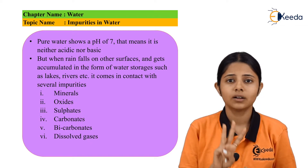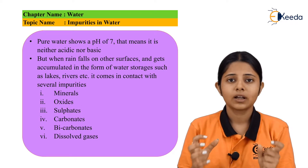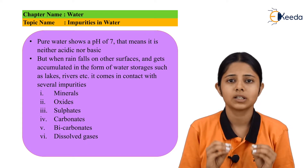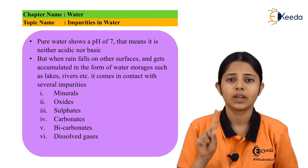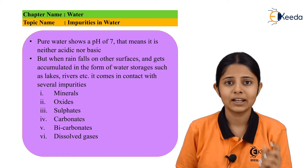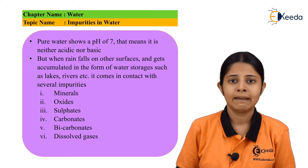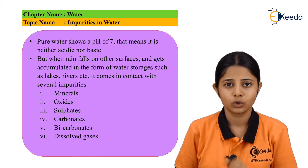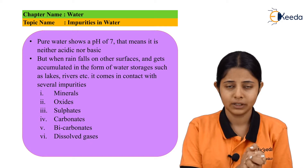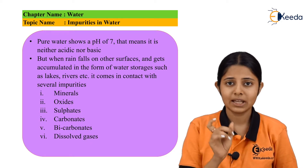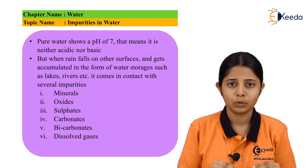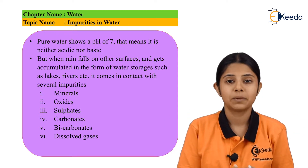Apart from oxides, the third thing we have are sulfates. Sulfates are any element combined with sulfur and oxygen, and these sulfates also get mixed in water easily. After sulfates, we have carbonates and bicarbonates. CaCO3 is calcium carbonate and Ca(HCO3)2 is calcium bicarbonate. The CO3 group is the carbonate group and the HCO3 group is the bicarbonate group. If the carbonate group attaches to any element it forms the carbonate of that element, and if HCO3 attaches to any element it forms the bicarbonate of that element. These carbonates and bicarbonates are present in the atmosphere as well as in the soil.